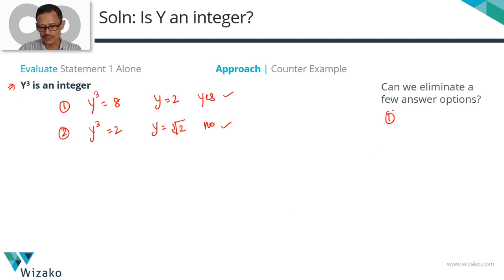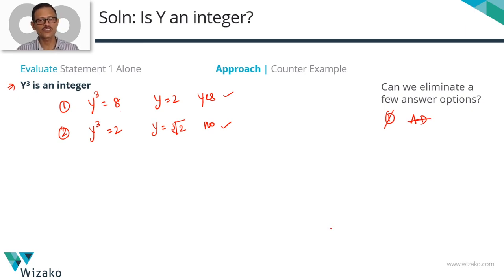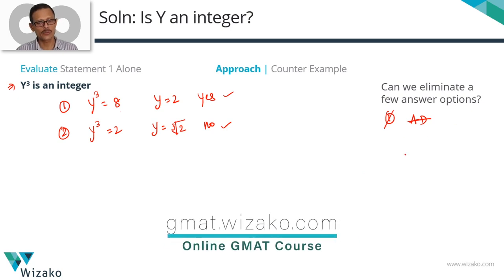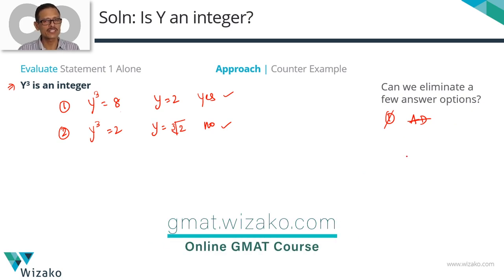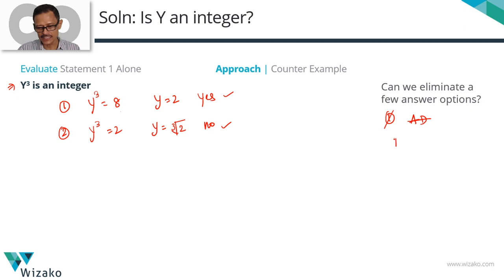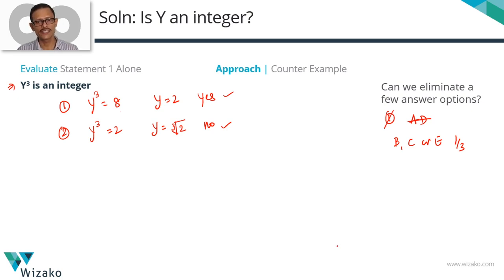Since statement 1 is not sufficient, we can rule out answer options A and D. A says statement 1 alone is sufficient — we know it's not. D says each statement is independently sufficient — if 1 alone is not sufficient, that can't hold. We've eliminated 40% of the answer options and are down to B, C, or E, giving us a one-in-three chance of getting this right.